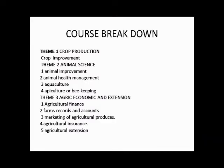Now, the course breakdown — what we'll be doing in this class, the SS3 syllabus of Agricultural Science. We have it in five themes. Theme 1 is Crop Production, and under that we'll be talking about crop improvement. Theme 2 is Animal Science, where we'll be talking about animal improvement.